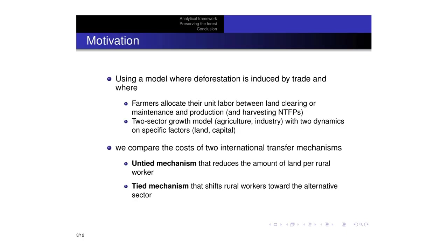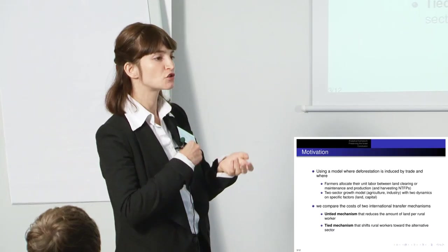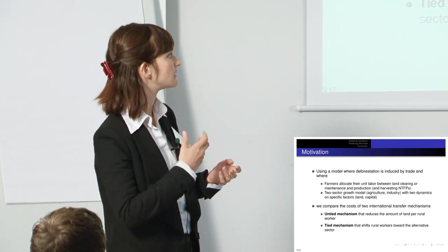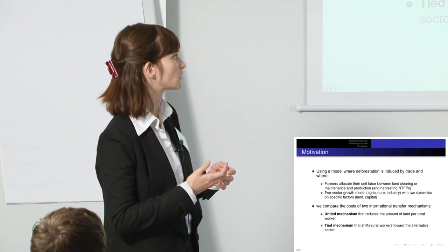What I want to show you is that there are two ways to define the opportunity cost of reducing deforestation. One is what I will call the untied mechanism. So that's a transfer mechanism that would cover the opportunity cost in an economy that is mostly specialised in agriculture.